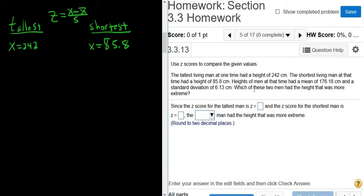Heights of men at that time had a mean of 176.18. So x-bar is 176.18. It's the same here, right? It's the same x-bar for both because x-bar is the average height of men at this time.